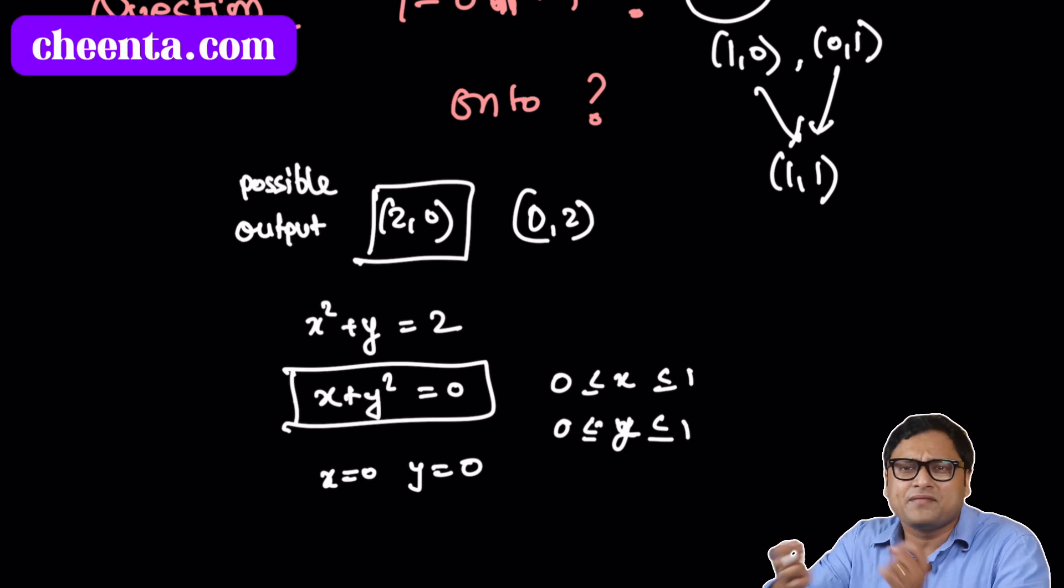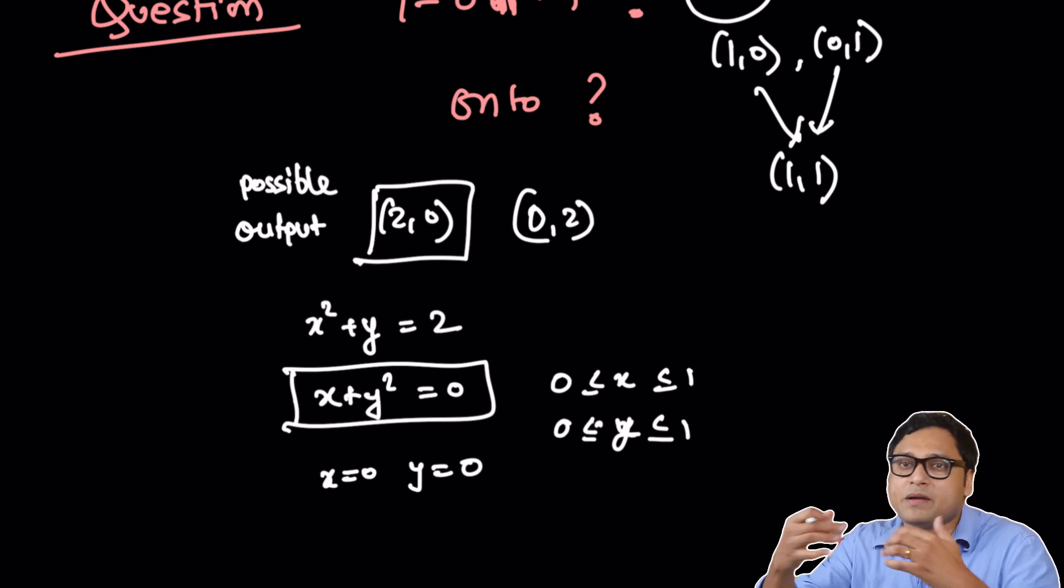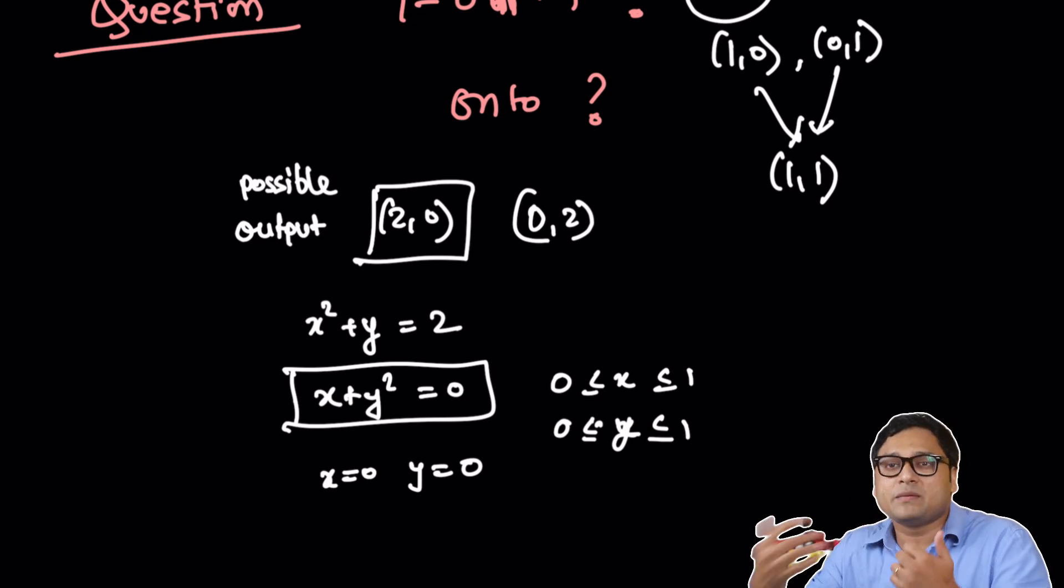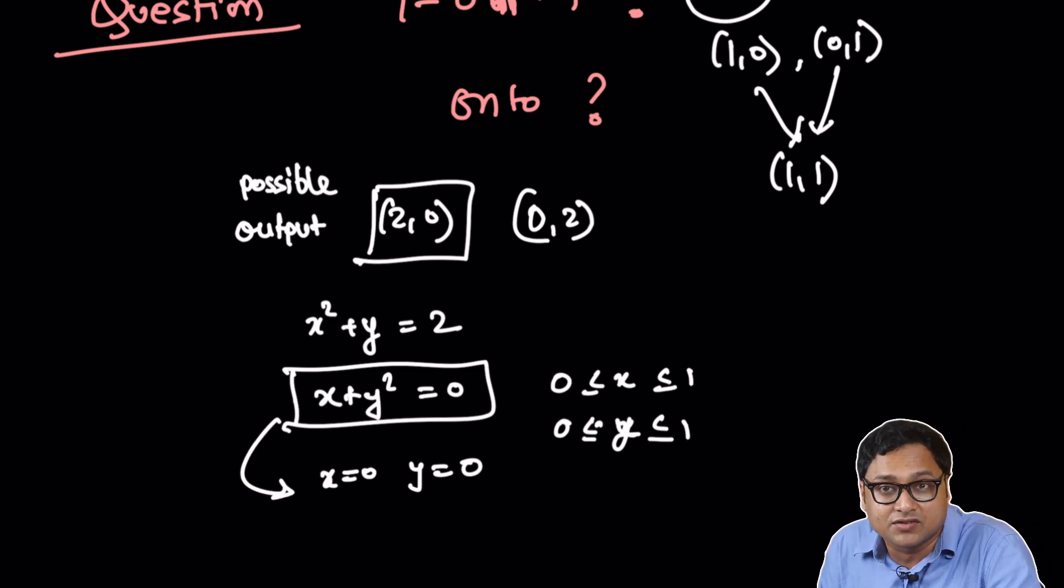Because if one of them is positive, and they can only be positive, they cannot be negative because x and y both are between 0 and 1. If one of them is positive, then x plus y squared will become positive. So from the second equation, we conclude that x equals 0, y equals 0.